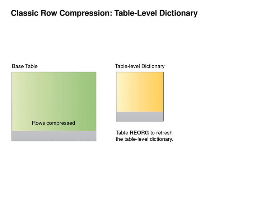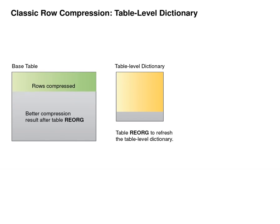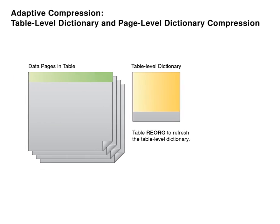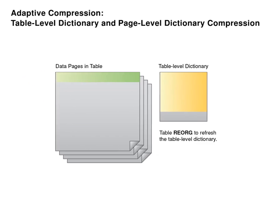However, performing offline reorgs introduces database downtime, which might be undesirable. DB2 adaptive compression provides advanced compression capabilities of data rows through the use of both a table-level and new page-level compression dictionaries.